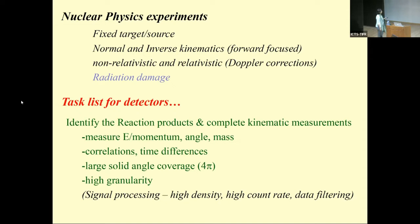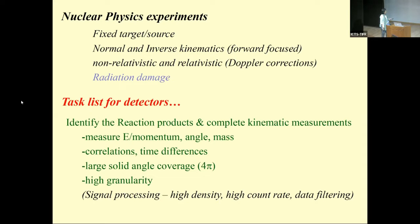What we want detectors to do is identify all reaction products and perform complete kinematic measurements — energy, momentum, angle, and mass. Since nuclear reactions produce products with correlations, we need gamma-particle or particle-particle coincidence detection, as well as time difference measurements. We want large solid angle coverage and high granularity to avoid pileups, though high granularity comes with readout electronics costs. Signal processing involves high density, high count rate, and data filtering.